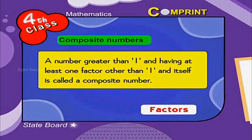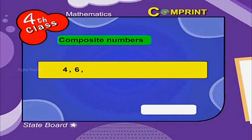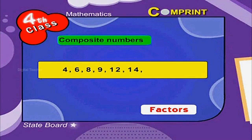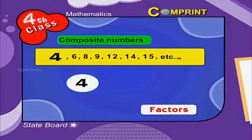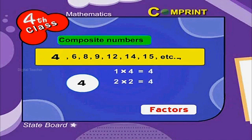For example 4, 6, 8, 9, 12, 14, 15 etc. In the number 4 the factors are 1, 2 and 4. Therefore 4 is a composite number.